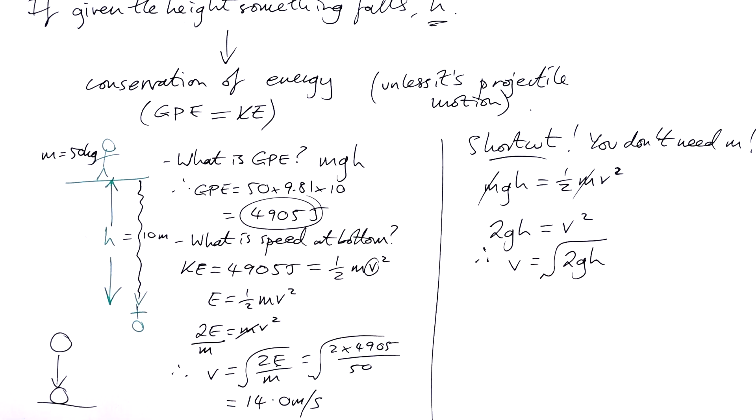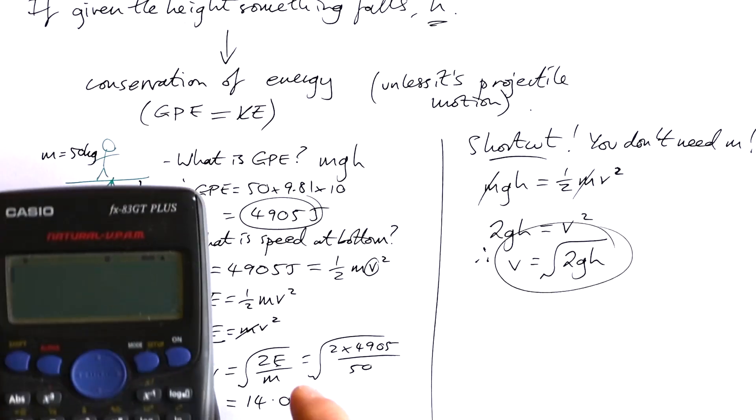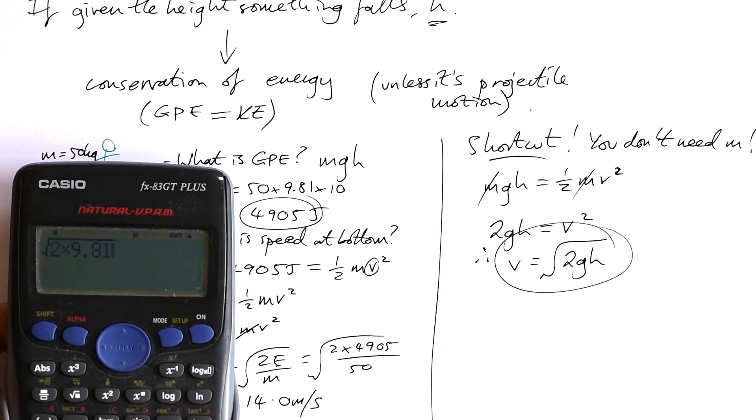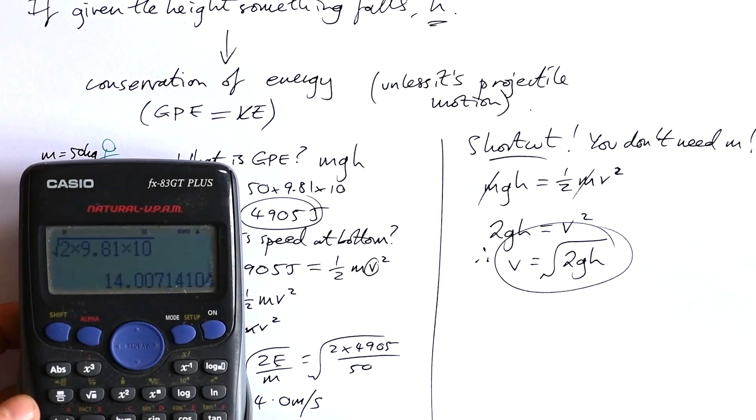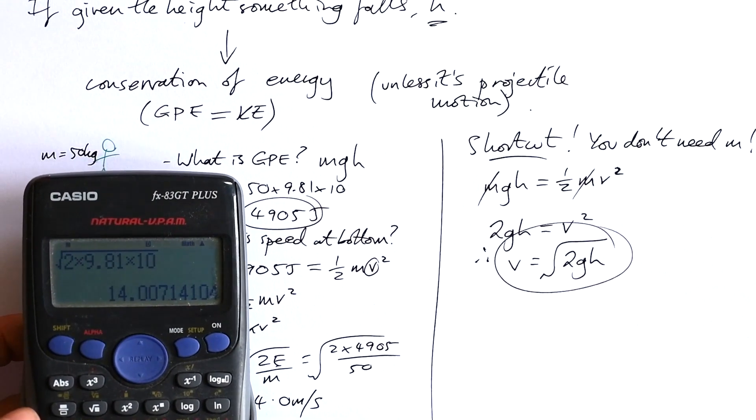Now you might notice that this is actually just a rearranging of Newton's equation of motion: V squared equals U squared plus 2AS. So whether you come from that angle or whether you come from energy, you always end up with V is equal to the square root of 2 times acceleration due to gravity, also known as gravitational field strength, times the distance moved. In this case, it's height. So let's just check to see if that's correct: square root of 2 times 9.81 times 10. Lo and behold, it is 14 meters per second.